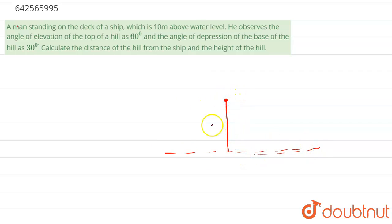Now the man is standing here, this is 10 meters. He observes the angle of elevation of top of a hill is 60 degrees. So there is a hill, suppose this is the hill. So angle of elevation of top of this hill, this is the top of hill, and this is angle of elevation which is given as 60 degrees.